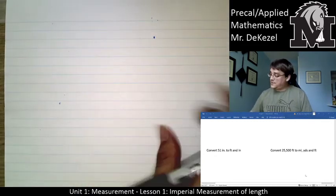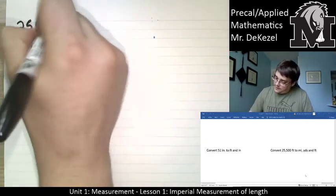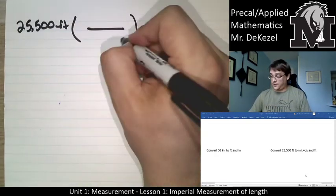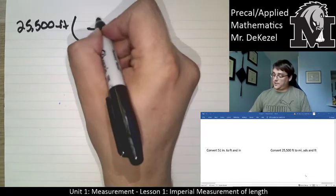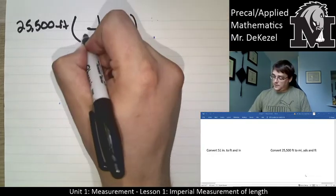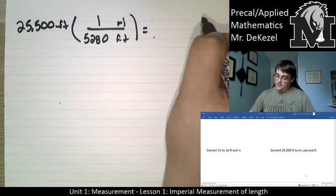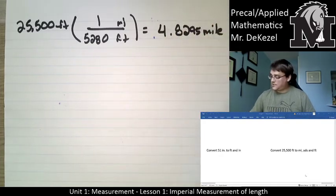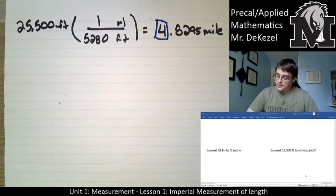One more example: 25,500 feet — we're going to convert that into miles, yards, and feet. Start with the largest unit first: miles. Miles goes on the top, feet on the bottom. From page two, there are 5,280 feet in one mile. This will equal 4.8295 miles. So we know we have 4 miles — but we don't know how many yards and feet that is yet.